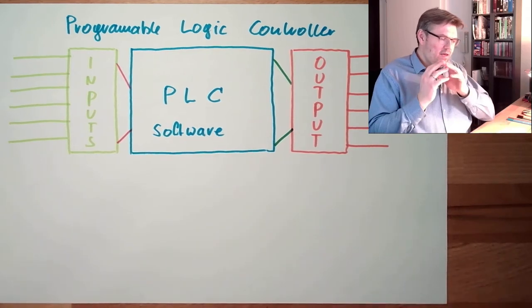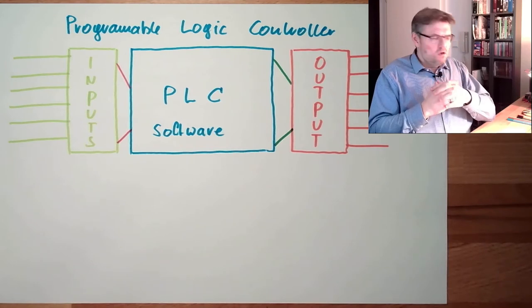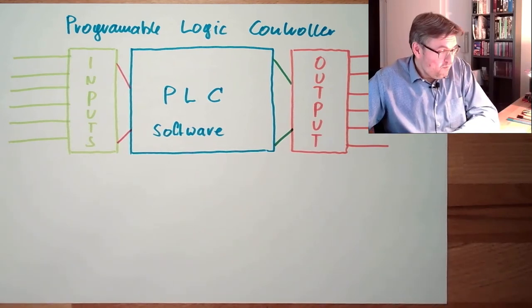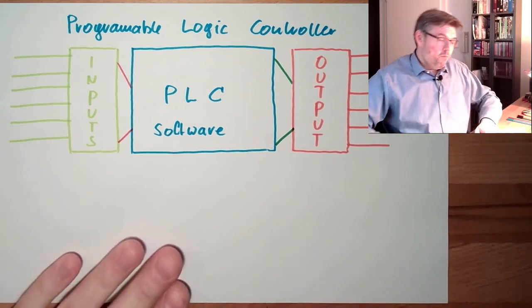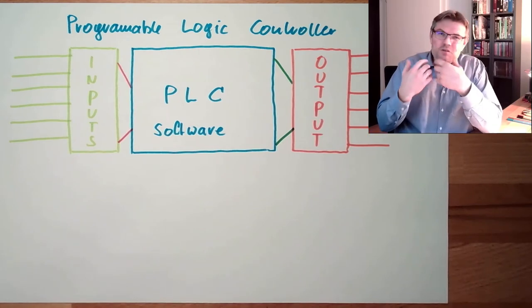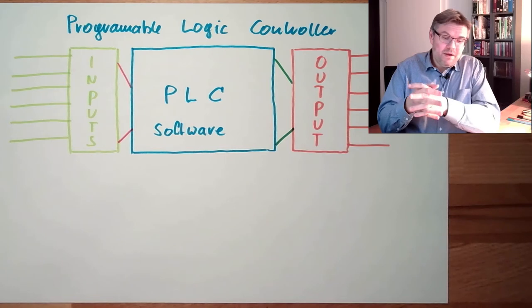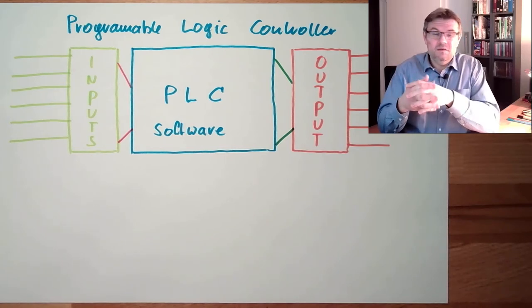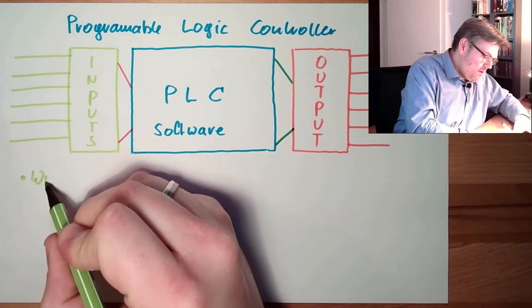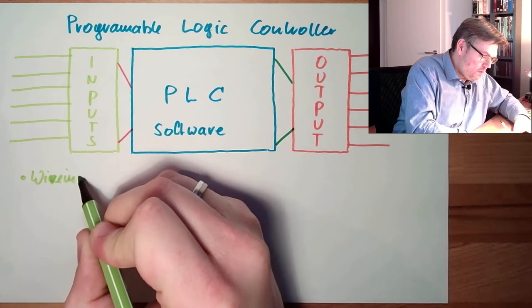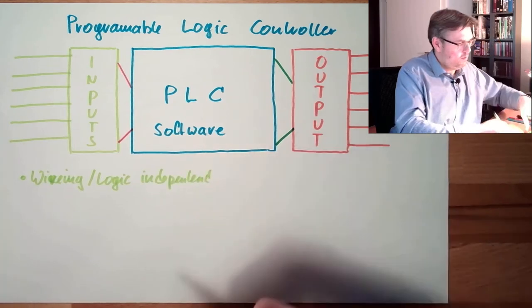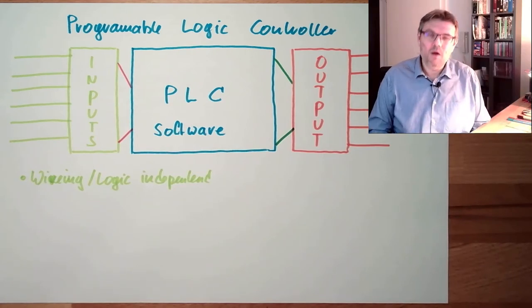And then people realized there are a bunch of advantages with PLCs. Because now, PLC is the main control variant, simply because of its advantages. With the same hardware setup, totally the same hardware setup, I can, without changing any hardware which needs time, implement a new or improved control mechanism simply by changing the software. So wiring and logic are usually independent.